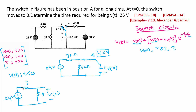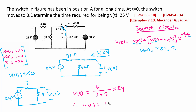This V0 is found using the voltage divider rule. Looking at the circuit: we have 3 kΩ and 5 kΩ resistances with a 24V supply. V0 is equal to 5 divided by the total resistance (3 plus 5) into 24V. So V0 is 15V.